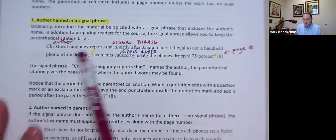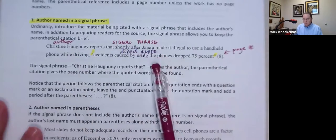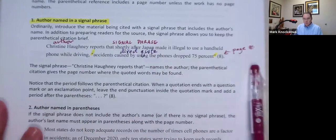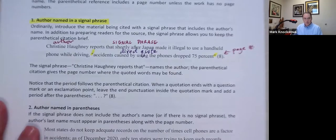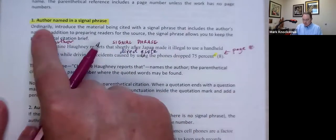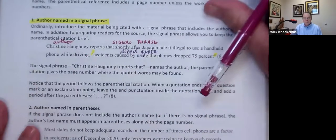So author, signal phrase, direct quote, and then the page number. And there we go. That's how we do it. So again, that's the author named in a signal phrase.